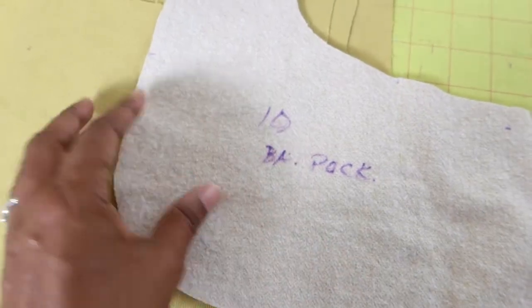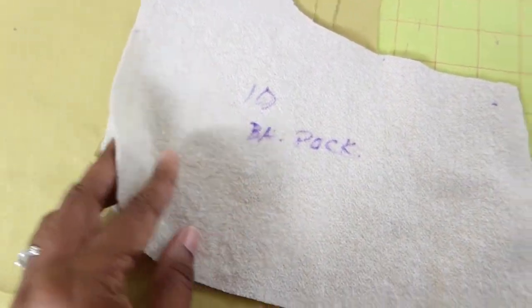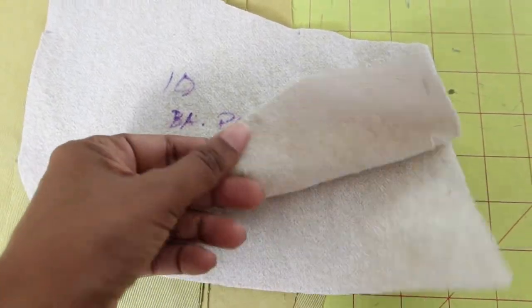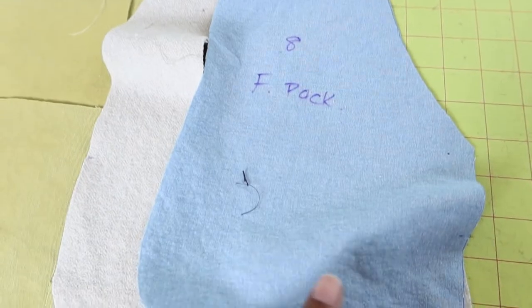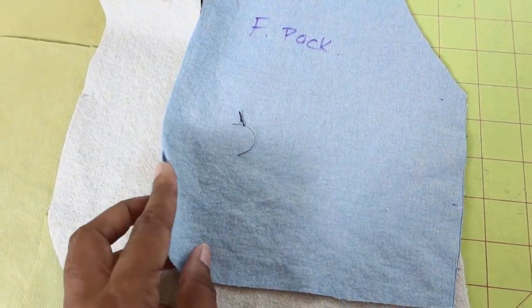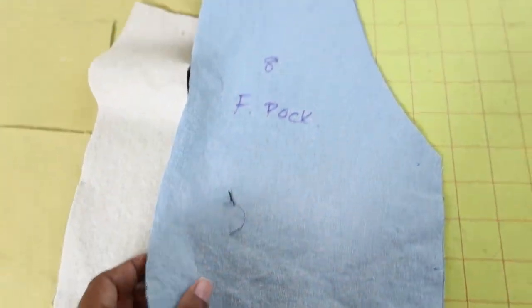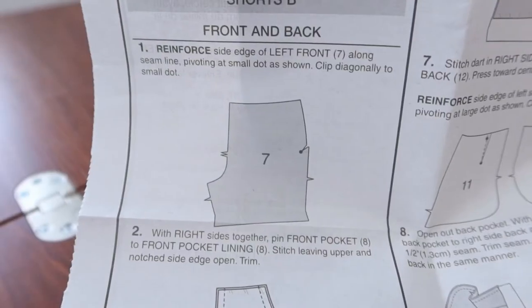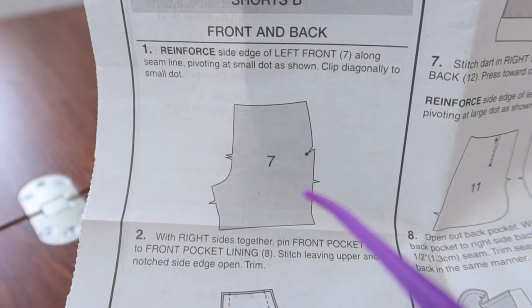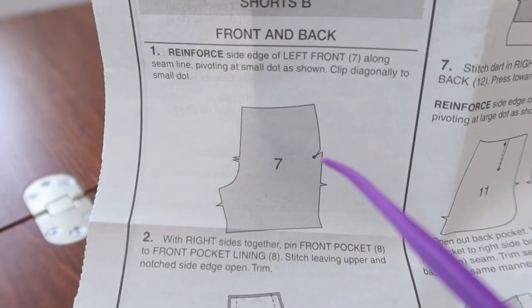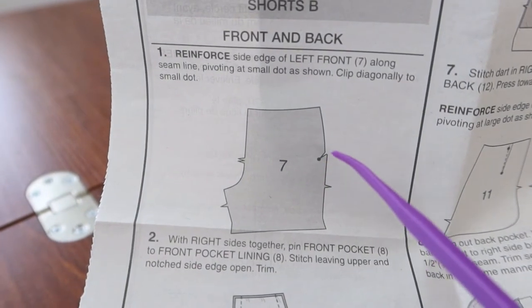I purchased this 100% cotton denim from Joann Fabric, so I will be using this for the shorts. And then for the back pocket lining, I'm going to be using this fabric, which is the same fabric that I used for the skirt that I've been sharing. And then for the front pocket, I'm just going to use this denim fabric that I had left over in my little scrap bin.